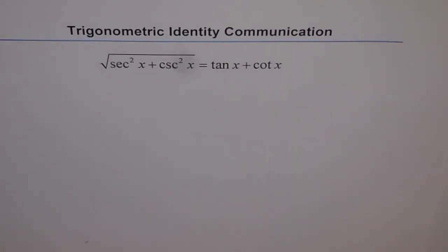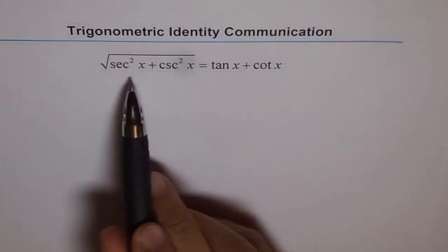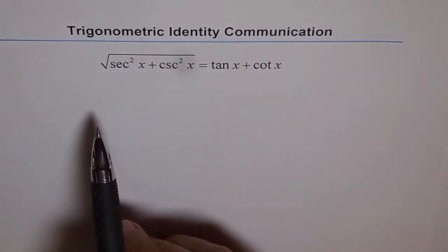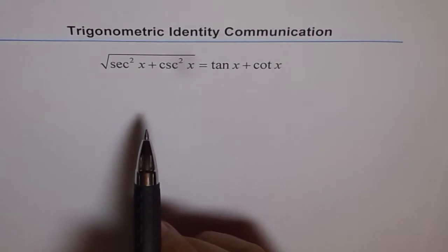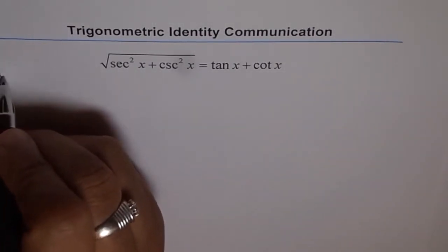So how will you solve this identity? We see that the left side is more complicated than right, so we'll start from the left side. What we can do is write all these terms in terms of sine and cosine and then see what happens.